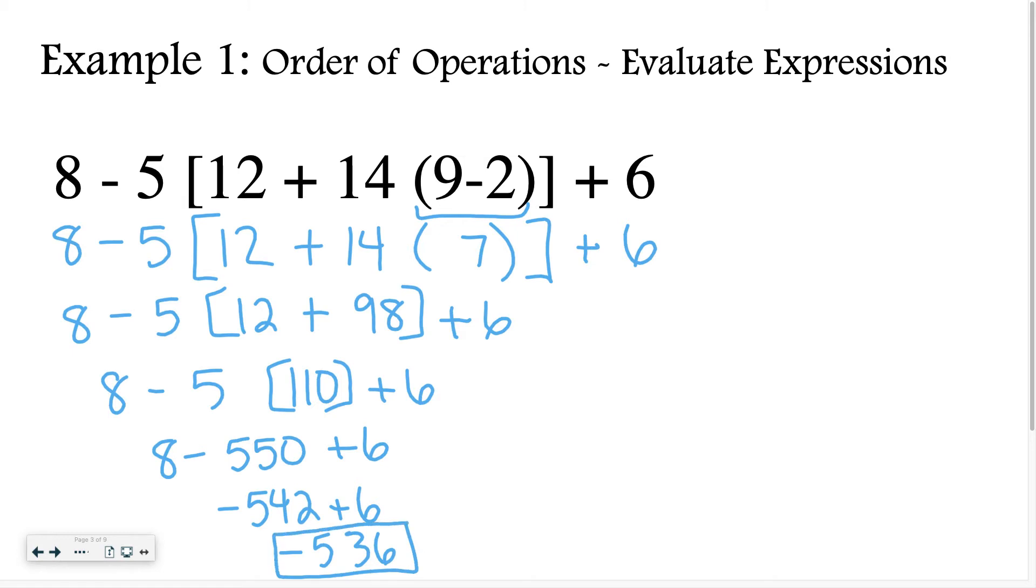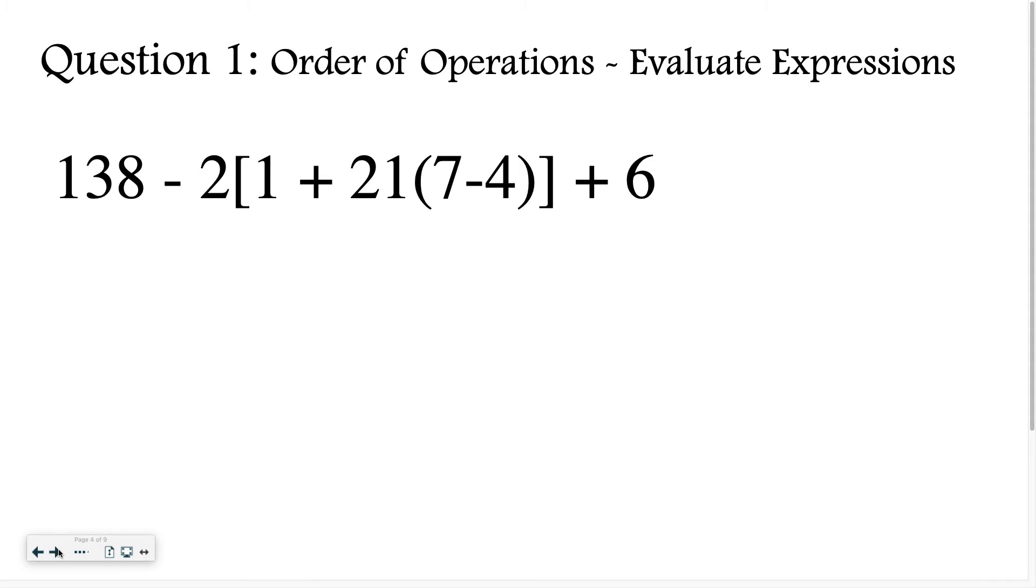When I finish simplifying, I have negative 536 as an answer. You can see I started at the innermost parentheses, then I just kept doing one step at a time. I want you guys to try to solve this problem on your own. Good luck.